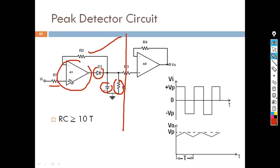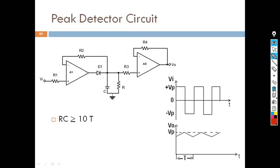The value of R is very large compared to R1 and R2. R1 and R2 are very small, so that the discharge will take a long time. This is the circuit diagram explanation.